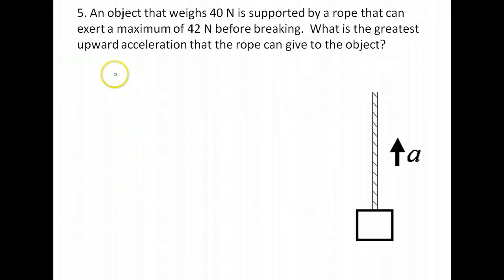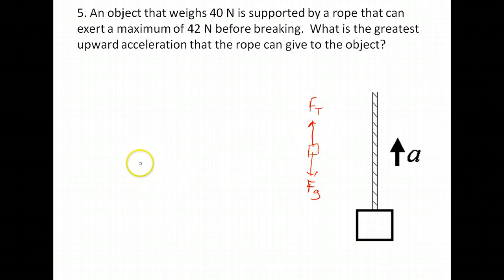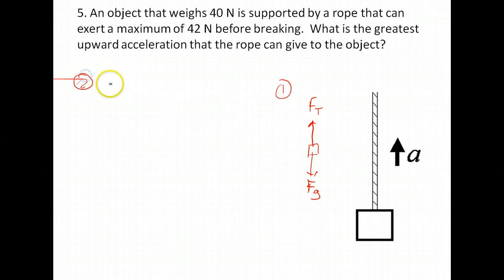Let's look at number five. An object that weighs 40 newtons is supported by a rope that can exert a maximum of 42 newtons before breaking. What is the greatest upward acceleration the rope can give to the object? Again, the first important step is the free body diagram. We have the force of gravity pulling down and the force of tension pulling up. The all-important second step is: sum of forces equals ma.